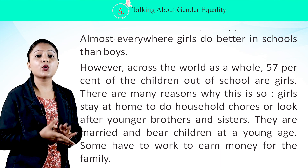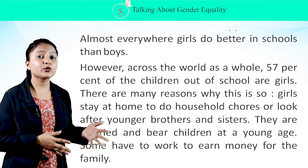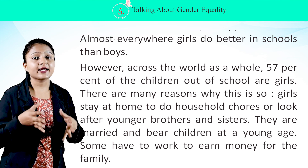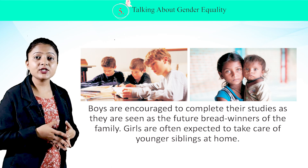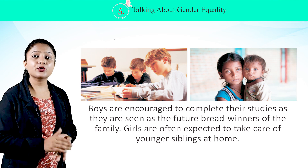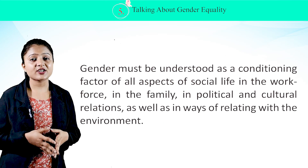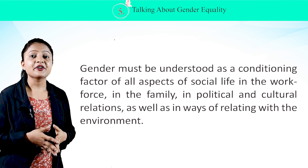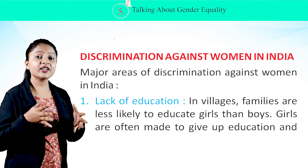Across the world as a whole, 57% of children out of school are girls. There are many reasons for this: girls stay at home to do household chores or look after younger siblings; they are married and bear children at a young age; some have to work to earn money for the family. This image depicts boys encouraged to complete their studies as they are seen as future breadwinners, while girls are often expected to take care of younger siblings at home. Gender must be understood as a conditioning factor of all aspects of social life — in the workforce, in the family, in political and cultural relations, as well as in ways of relating with the environment.